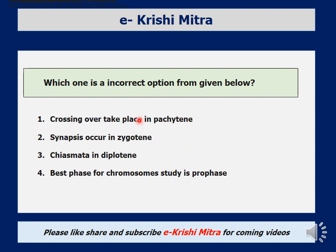Eleventh question: which one is an incorrect option from those given about meiosis? Options are: crossing over takes place in pachytene; synapsis occurs in zygotene; chiasmata in diplotene; best phase for chromosome study is prophase. Crossing over on non-sister chromatids occurs in pachytene — correct. Synapsis, the pairing of chromosomes, occurs in zygotene — correct. Chiasmata is the site where crossing over occurs — correct. However, the best stage for chromosome study is metaphase or anaphase, not prophase. In metaphase chromosomes are counted; in anaphase different shapes are observed. So the incorrect option is prophase.